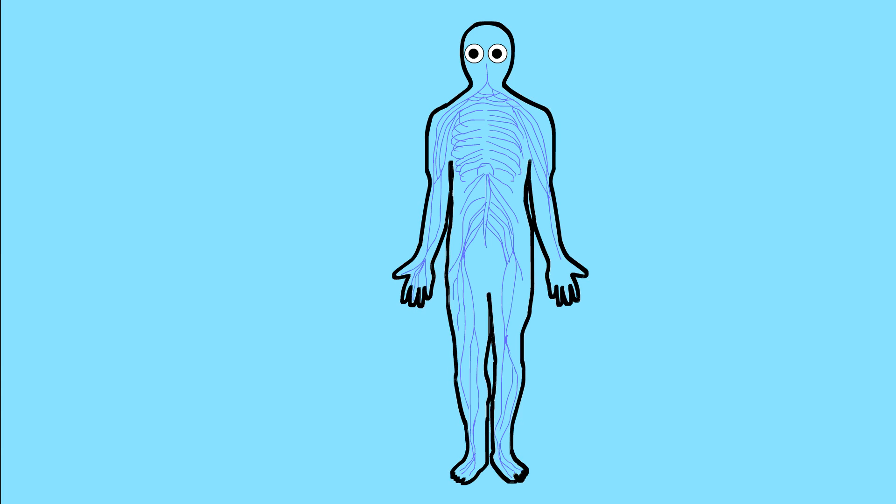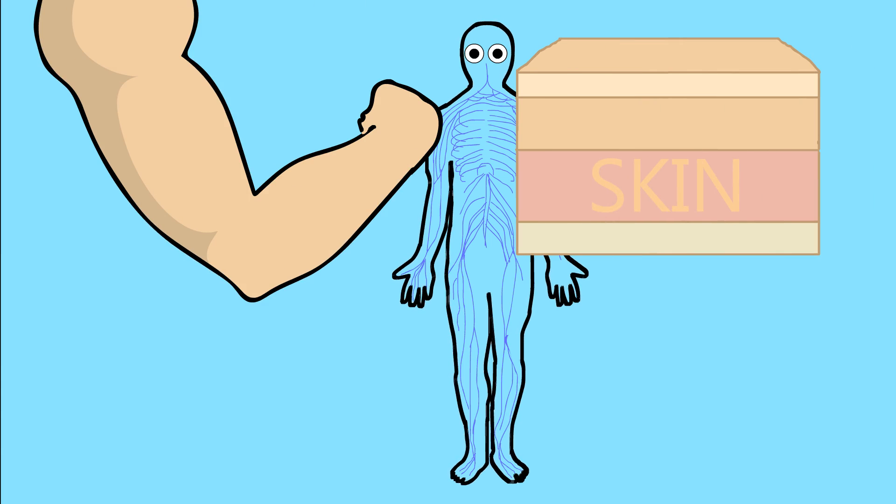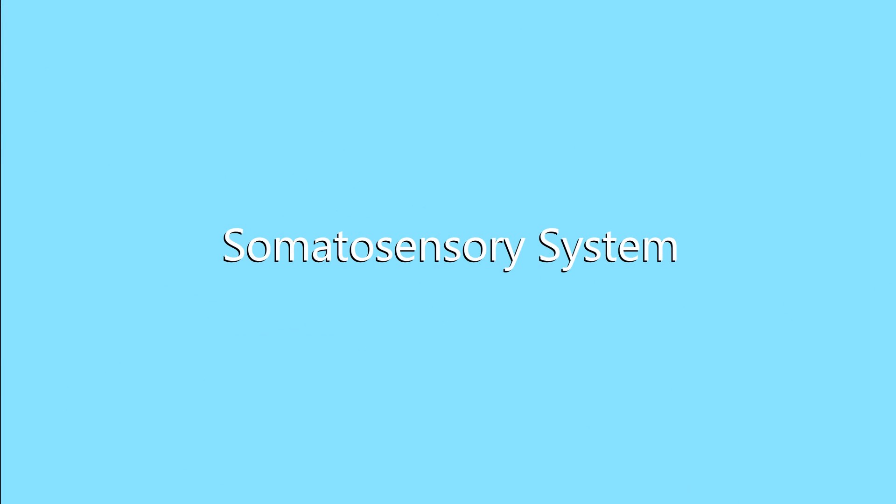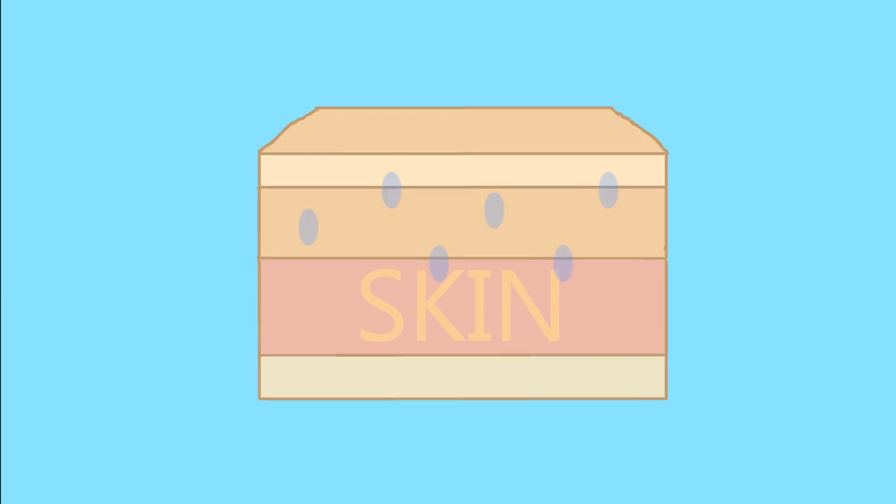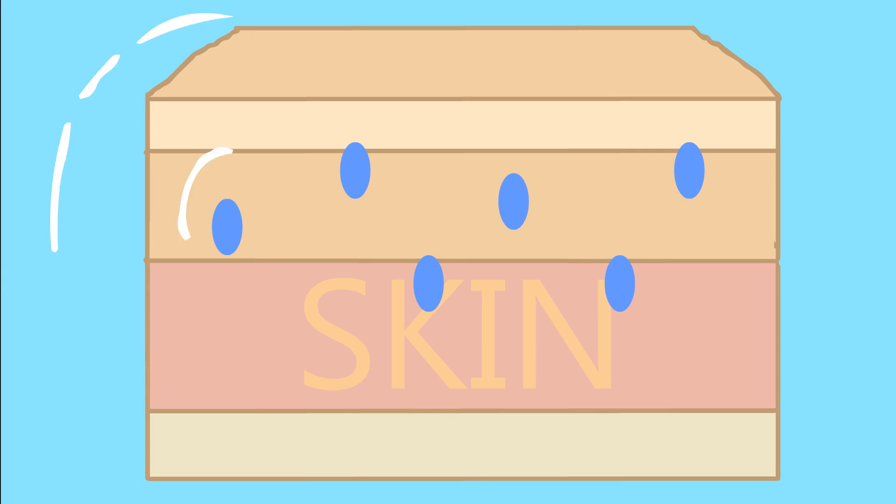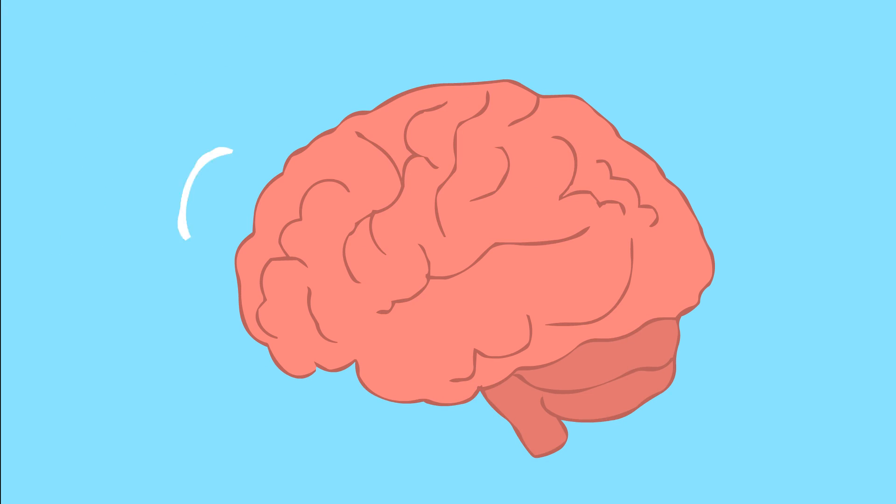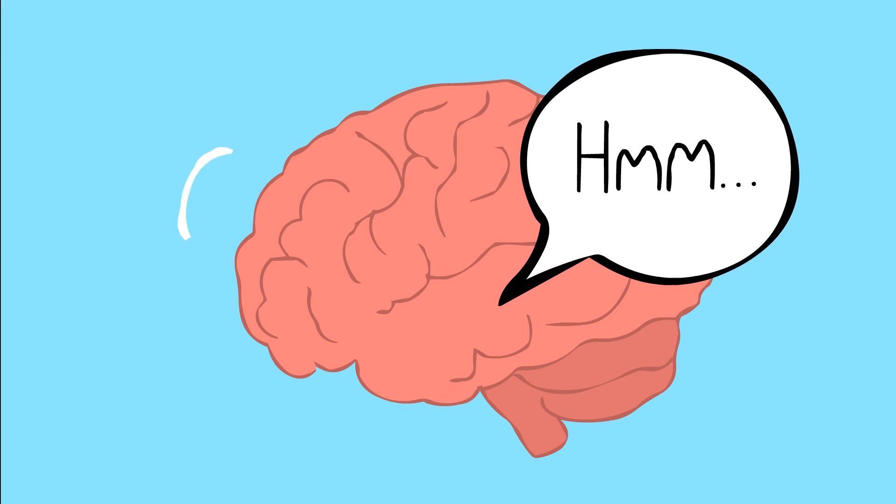Our bodies have an entire system of receptors in our skin, muscles, bone, and more called the somatosensory system. When the receptors receive a signal, they send the information through our nerves and into our brains. Our brains receive the signal and then try to make sense of what the receptors are telling it.